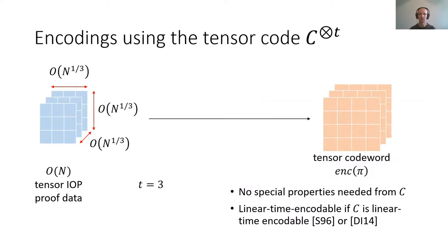We choose tensor encodings. More precisely, we take a linear code C, which doesn't need to have any special properties at all, and we encode the tensor IOP proof messages using the tensor code C to the power T. If C is a linear time encodable code, such as a Spielmann code or a Drucker-Schreit code, then the tensor code is also linear time encodable.